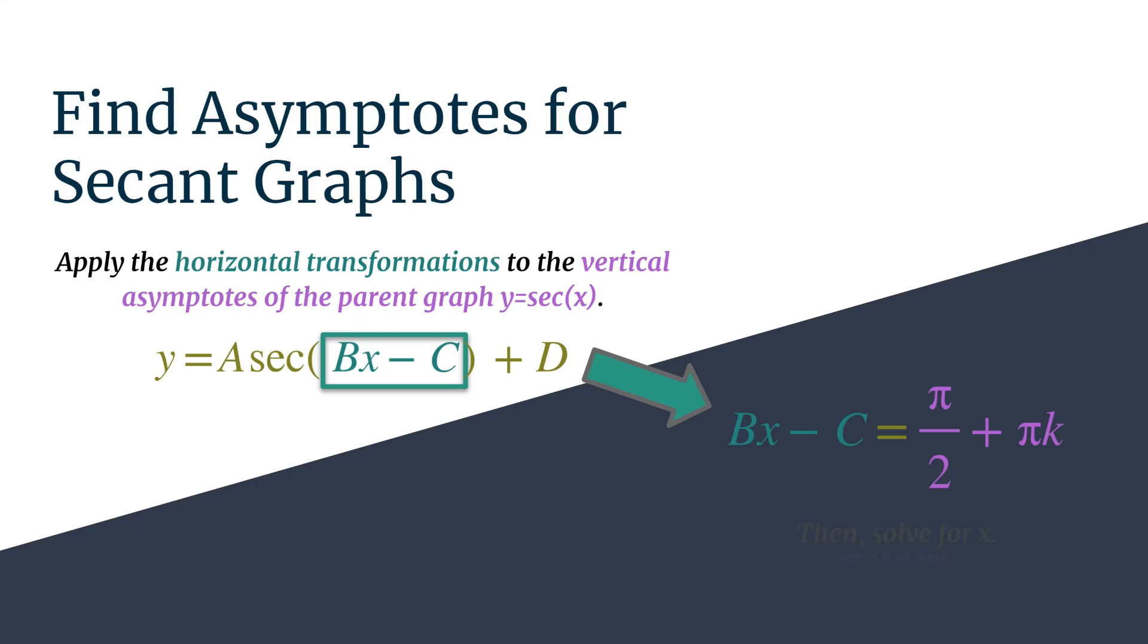Once you do that, it's super simple. Solve for x and do know that k is an integer. So depending on what integer you substitute in to the equation, you'll get a different asymptote. But the equation as a whole, I like to call it the asymptote generating equation for your secant graph. So it's really a nice, concise way to represent all of the vertical asymptotes for the graph.